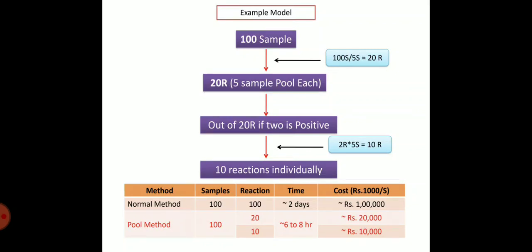To put it simply with a model: imagine 100 samples. If you want to screen 100 samples individually, that is cumbersome. Using pooling — 100 samples, five each — you only need to do 20 reactions. If 2 pools turn out positive, you multiply 2 by 5, so you have to do 10 additional individual reactions — totaling 30 reactions. The bottom table clearly shows: the normal method requires 100 reactions, takes two days, and costs 1 lakh rupees.